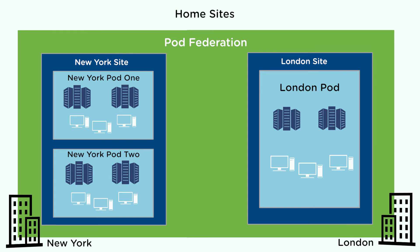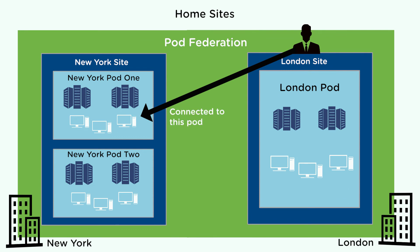You can assign sites to users by configuring home sites. A home site associates a user or group with a specific site in the pod federation. When a user has a home site, Horizon 7 looks for desktops and applications in the user's home site instead of in the site that the user is connected to. If the user's home site is unavailable or cannot satisfy the user's request, Horizon 7 looks in other sites in the pod federation.